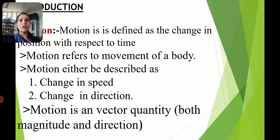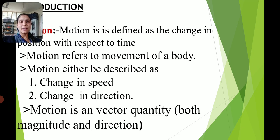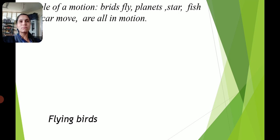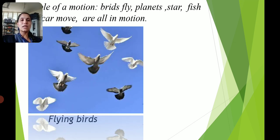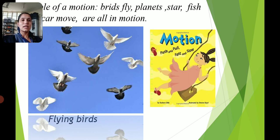Motion refers to movement of a body. A moving object is nothing but motion. Motion is a vector quantity — it has both magnitude and direction. Examples of motion: in nature, a bird flying, planets orbiting around the sun, fish swimming, a car moving — all are examples of motion.